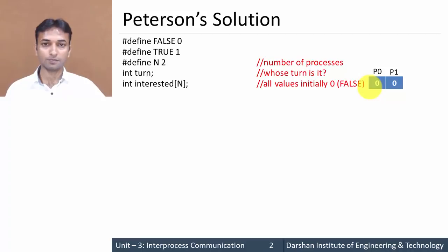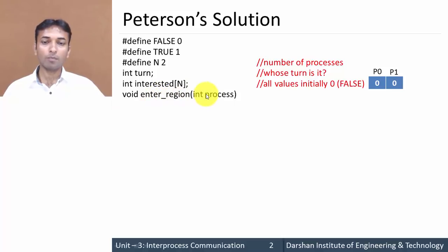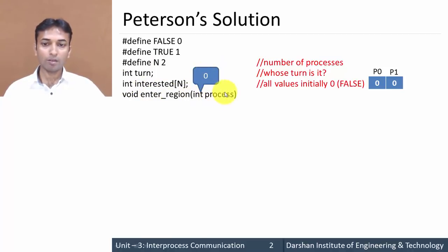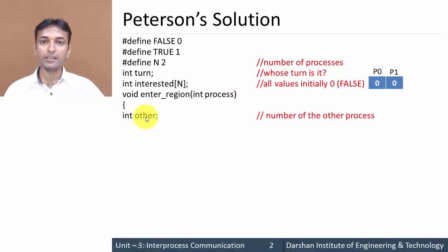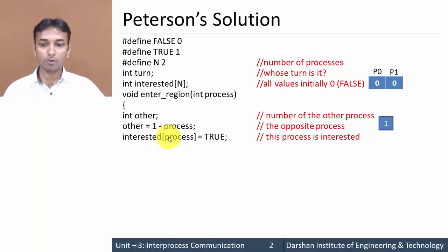The function `void enter_region(integer process)` is called whenever any process wants to enter its critical section. Suppose process 0 wants to enter, so this function is called with parameter 0. Inside, we declare a variable `other` and initialize it as `1 minus process`, so `other` becomes 1 minus 0, which equals 1.